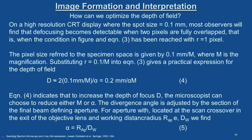This equation indicates that to increase depth of field D, the microscopist can reduce either M or α. Normally we are interested in higher magnification, so the divergence angle α is adjusted by selecting the final beam-defining aperture. For an aperture with radius R_ap located at the exit of the objective lens at working distance D_w, we find α = R_ap / D_w. This expression shows how one can optimize depth of field in SEM.